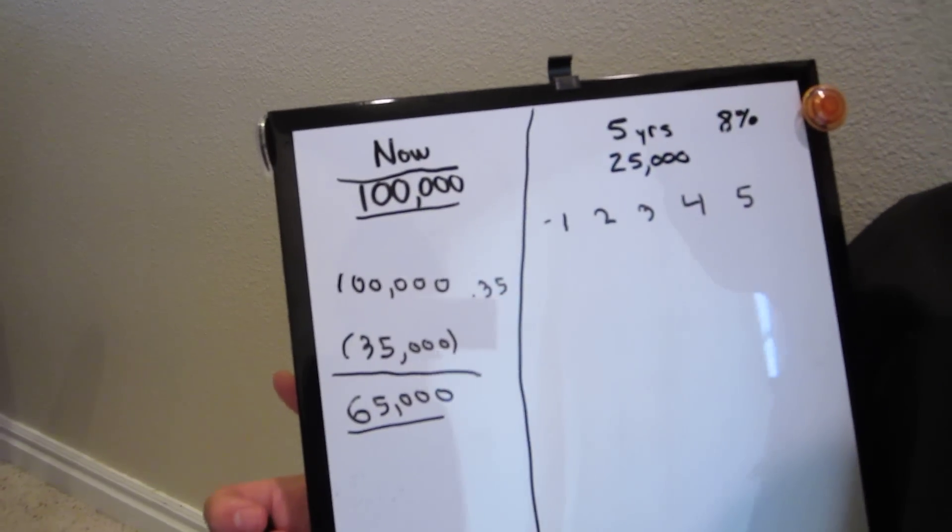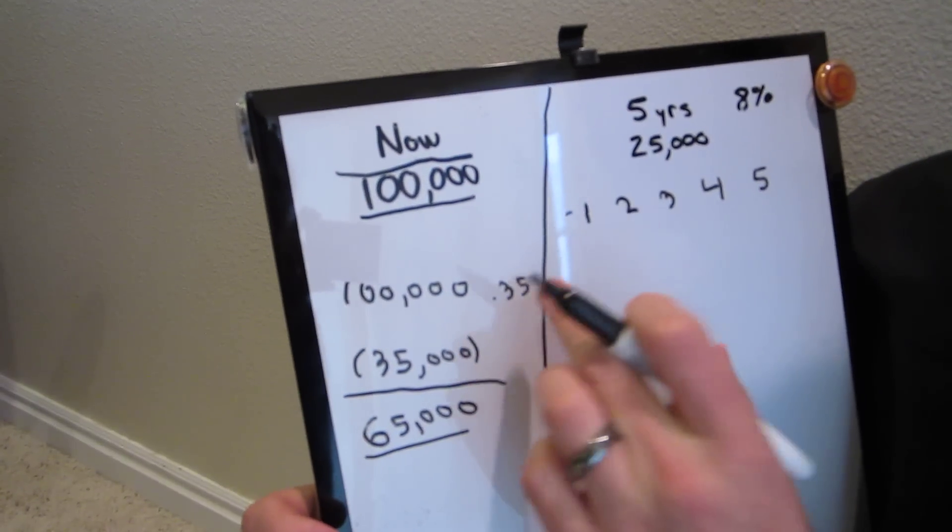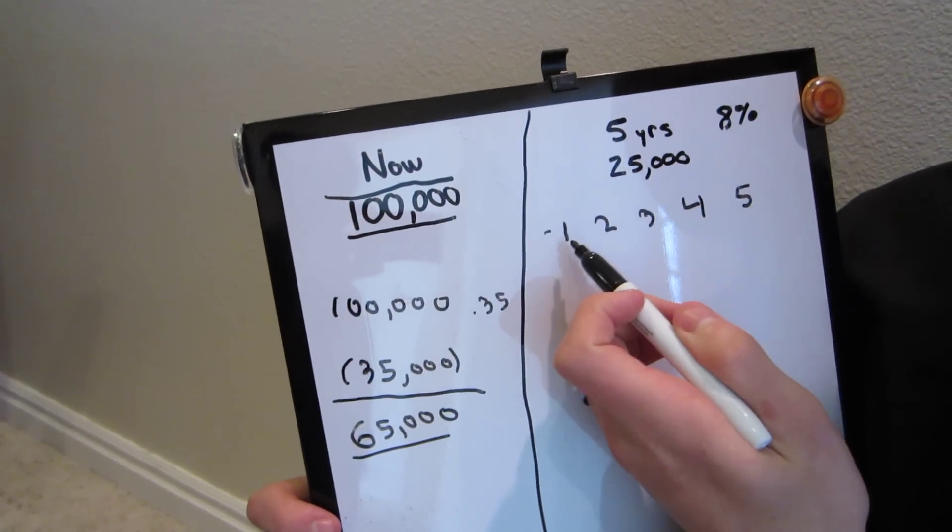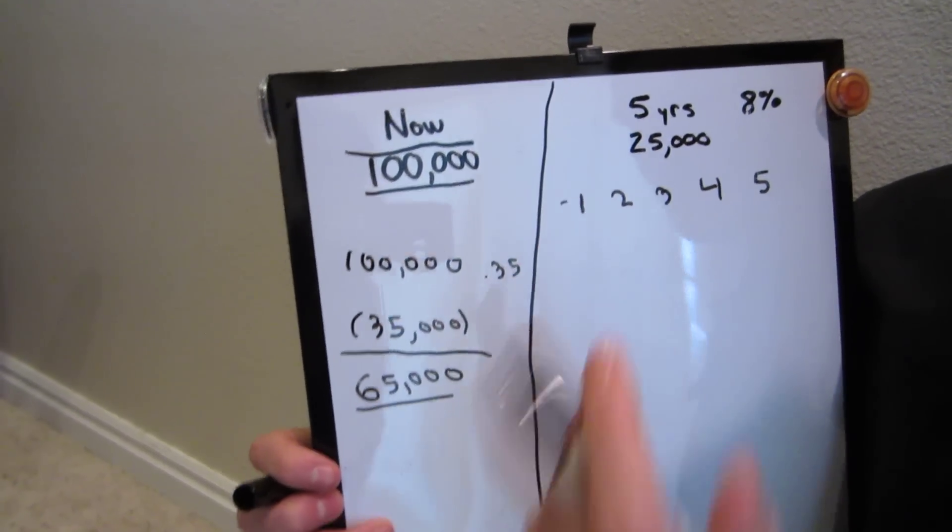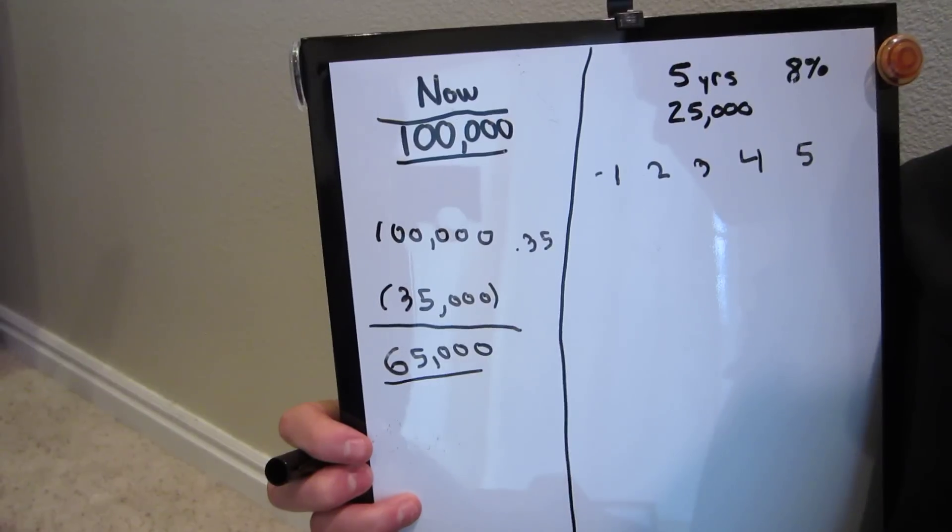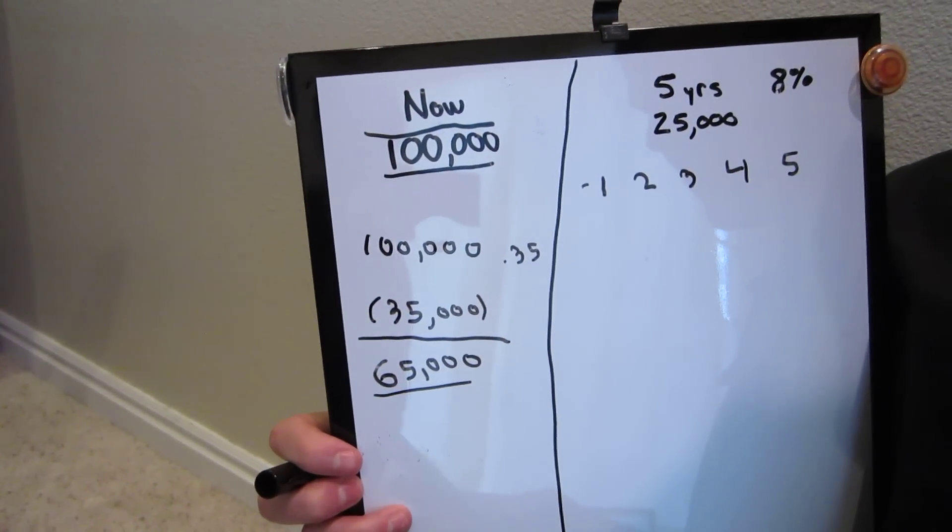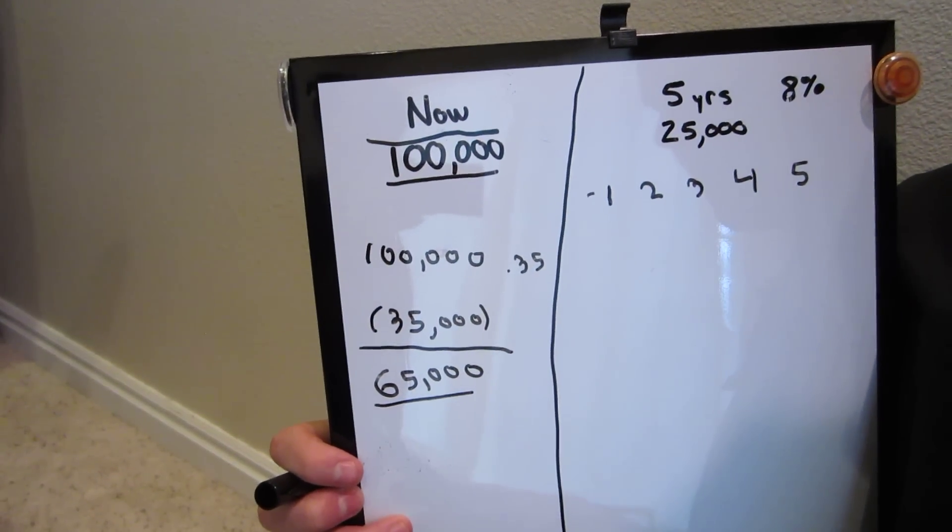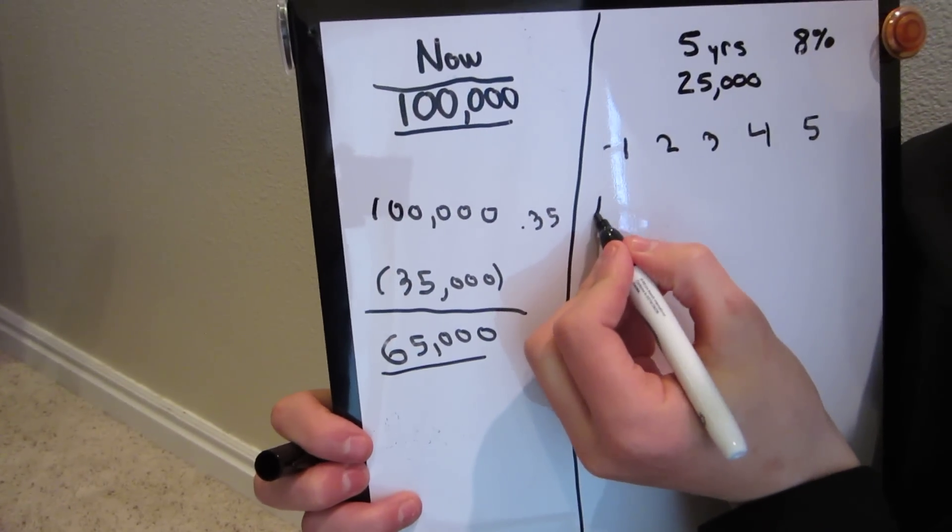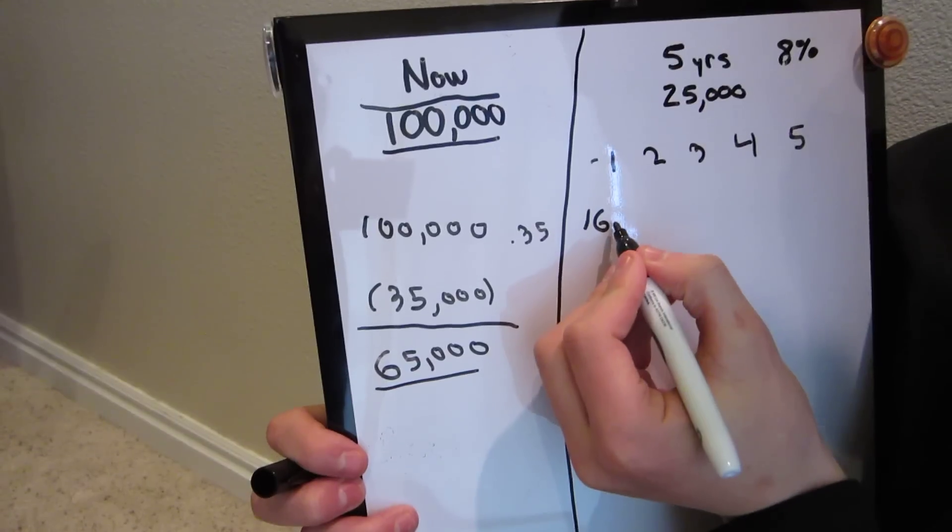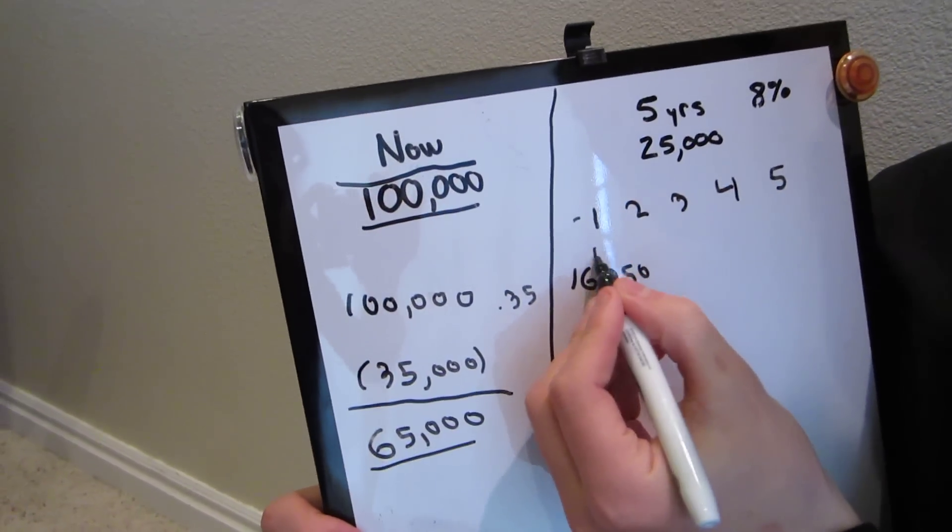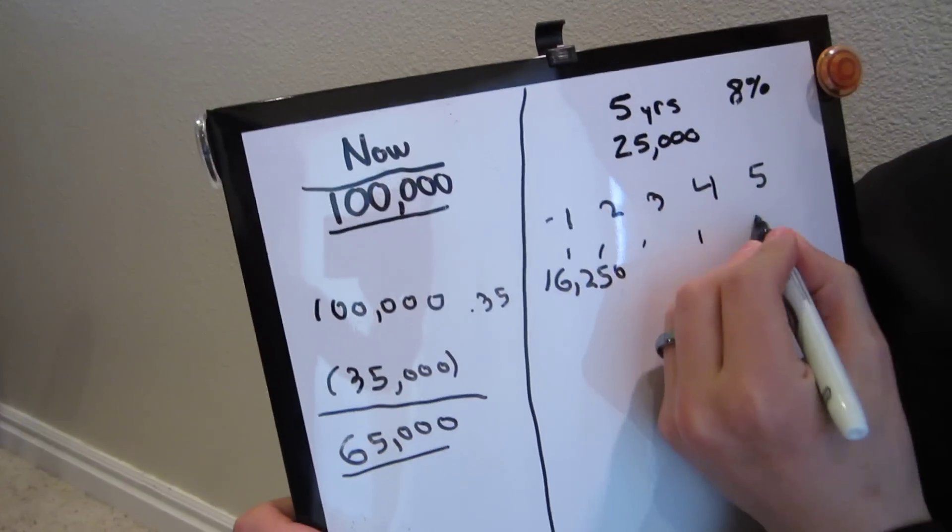If you decide to take the payment at the end of five years, we're going to assume the same tax rate. So $25,000 at the end of year one, after a 35% taxes, is going to be $25,000, and I'm just going to multiply it by 0.65 on my calculator. That's going to be $16,250. That's per each year, and that's after taxes.